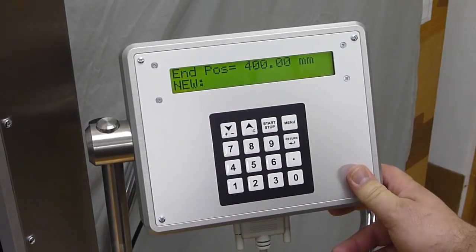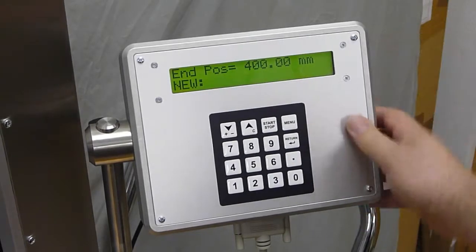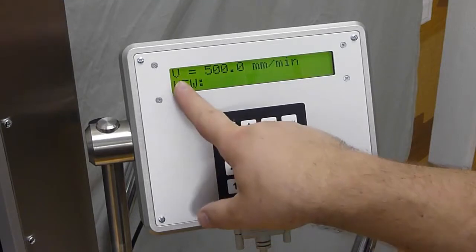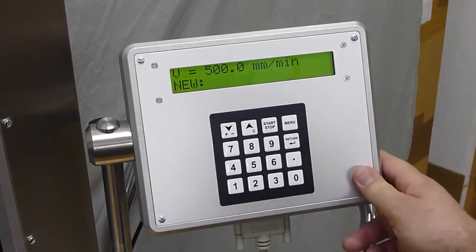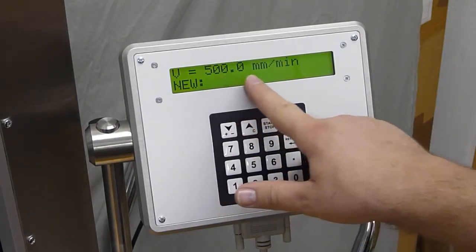This means how far away the machine will drive in test. So in this case, 400mm. V means speed of test, so the machine will drive 400mm at 500mm per minute.